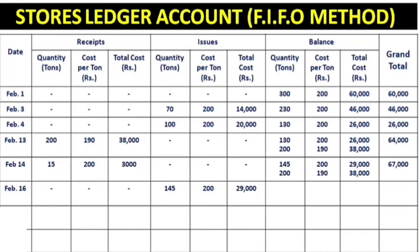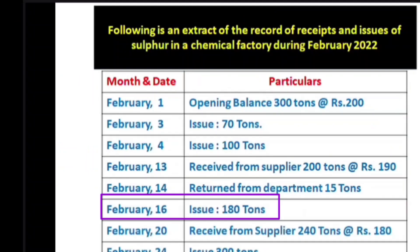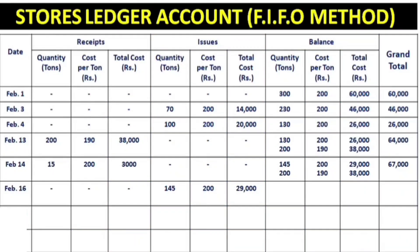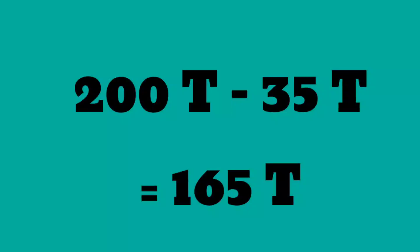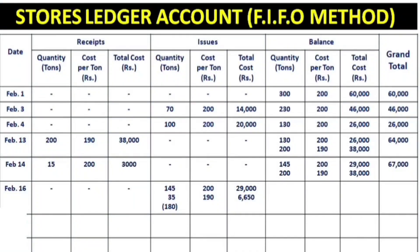Applying FIFO: we need to issue 180 tons. The oldest stock is 145 tons at 200 rupees — we issue all of that first. The remaining 35 tons come from the next stock at 190 rupees each. So: 145 tons at 200 rupees = 29,000, plus 35 tons at 190 rupees = 6,650, giving total issue of 180 tons.